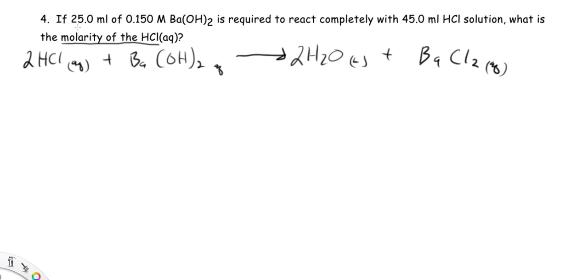In this case, we're given volume and molarity of our base, and we're given volume of our acid, so we need to figure out what is the molarity of the acid. We're given 45.0 milliliters of acid. The molarity is what we're looking for. In the case of the barium hydroxide, we're given 25.0 milliliters and 0.150 molar, so we know two things about the barium hydroxide, and we need to find the molarity of our acid.